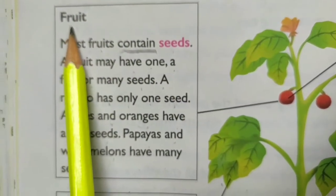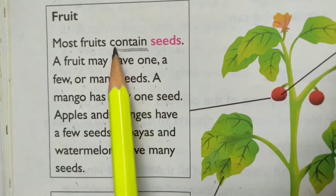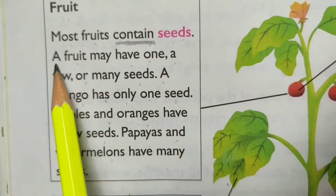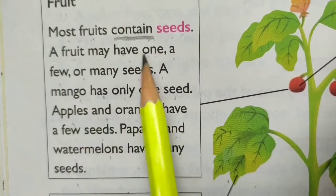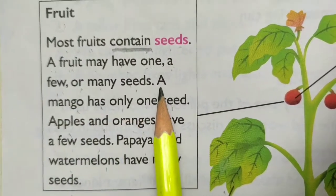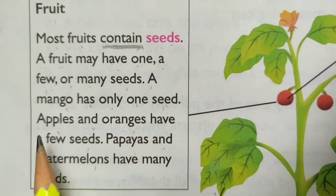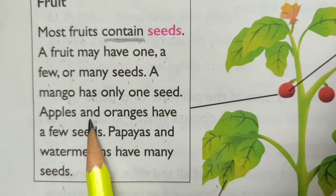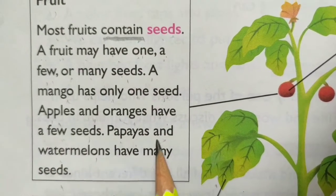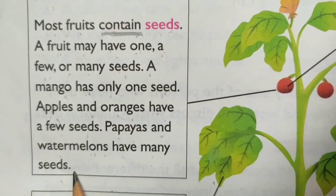Fruit. Most fruits contain seeds. A fruit may have one, a few or many seeds. A mango has only one seed. Apples and oranges have a few seeds. Papaya and watermelons have many seeds.